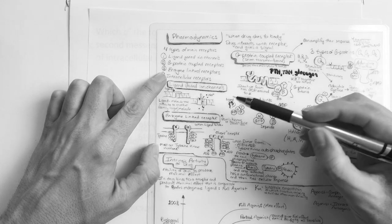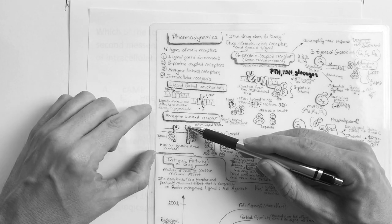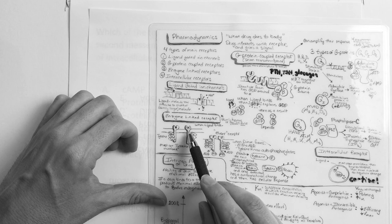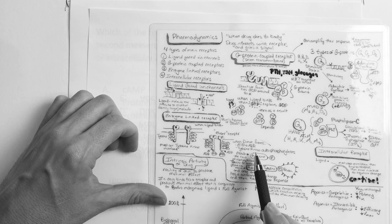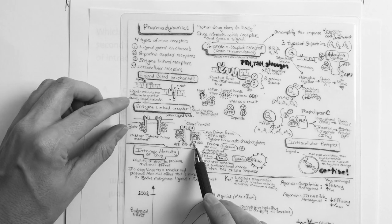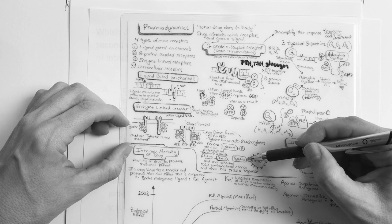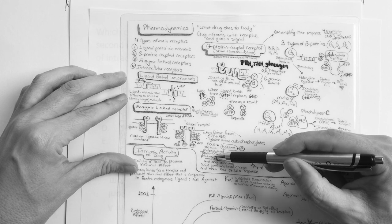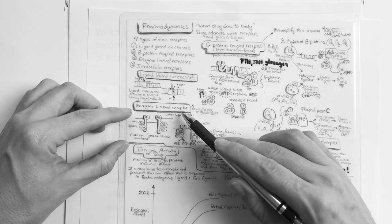Number two is the G protein — we'll come back to that in a second because that's where Step exam questions mainly come from. The third type is enzyme-linked receptors: when the ligand attaches, the receptors move closer, and the tyrosine becomes phosphorylated. Tyrosine kinase autophosphorylates — that's a key point — and then the protein attaches to the phosphate, causing a conformational change and a cellular response.